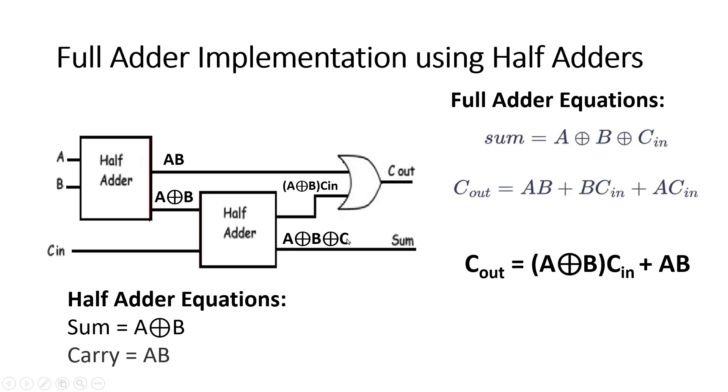Now if I put another half adder, if I apply A XOR B to that, it will give me its final value of sum A XOR B XOR C at the same bit. Now what will be the carry bit? A XOR B into C in, because it multiplies, right? And the other half adder will give AB because it multiplies both the inputs. Now you see the carry expression is A XOR B times C in, which is the output of the second half adder. Another is plus AB, which is the output of the first half adder. We need to put an OR gate here to get the final C out.